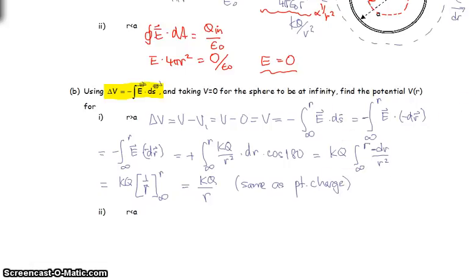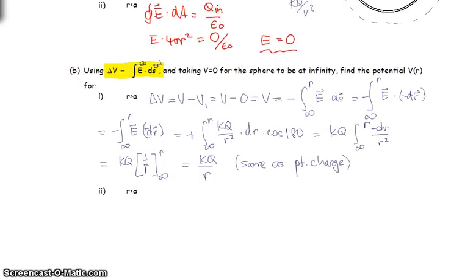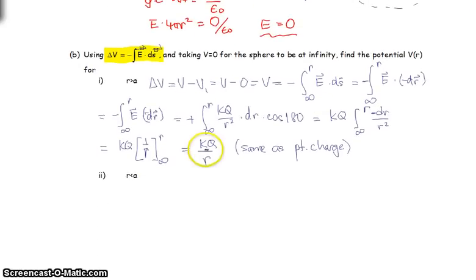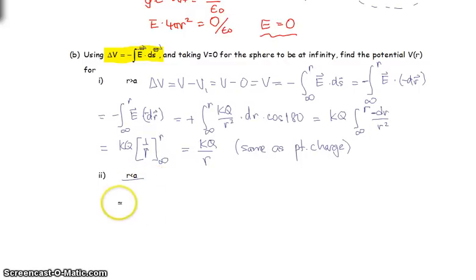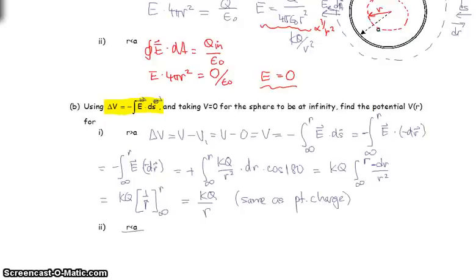Therefore the potential outside this sphere is KQ over r — the same as if it were a point charge. This should not be surprising, because the electric field for this radius-A shell is the same as a point charge, so it makes great sense we get KQ over r. Now, if we're integrating to r less than A, we have two integrals because there are two different electric fields: outside it's KQ over r squared, and inside it's zero.